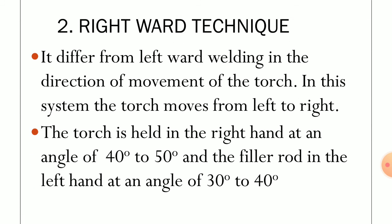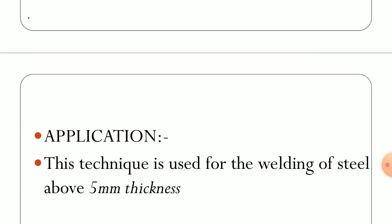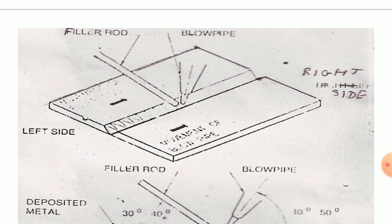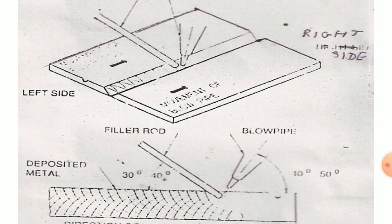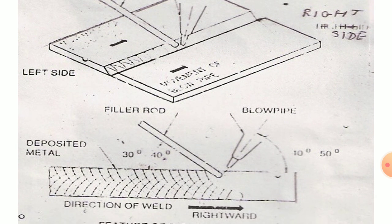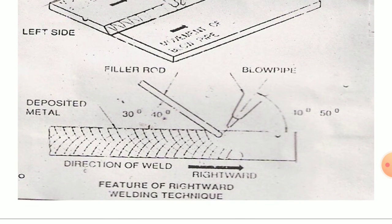The right weld welding technique is opposite to the left weld technique: the welding direction is from left to right. Accordingly, the filler rod material and blow pipe (welding torch) are adjusted to 40 to 50 degrees, whereas the filler rod is held at 30 to 40 degrees. This is the right weld welding technique.